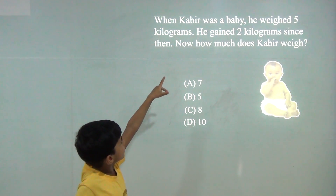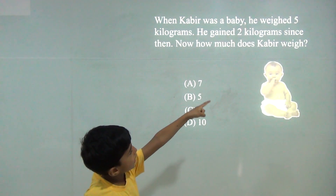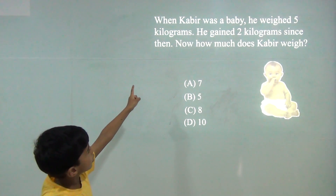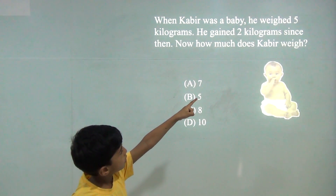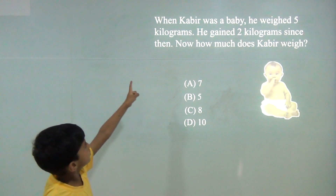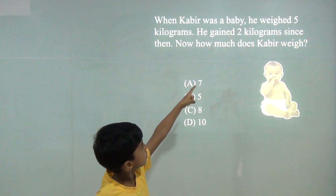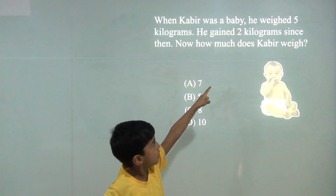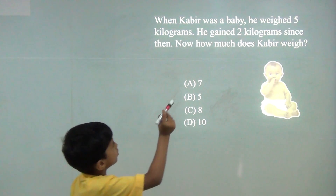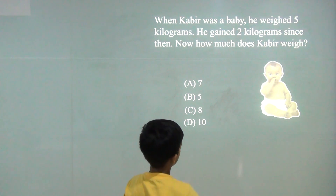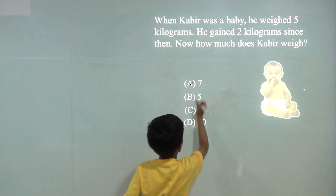When Cubby was a baby, he weighed 5 kilograms. He gained 2 kilograms since. Then how much does Cubby weigh? So we will do 5 plus 2 is 7. So the answer would be 7.